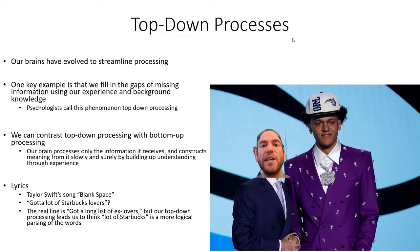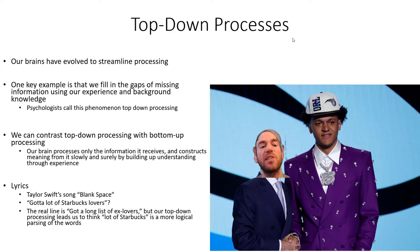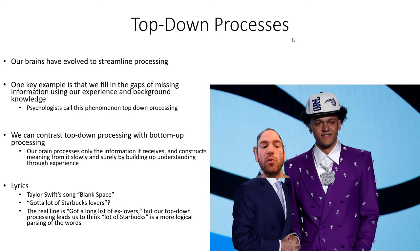One critical aspect of memory is top-down processes. Our brains have evolved to streamline processing of memory. One key example is that we fill in the gaps of missing information using our experience and background knowledge — psychologists call this top-down processing. We can contrast this with bottom-up processing, where our brain processes only the information it receives and constructs meaning slowly and surely by building up understanding through experience.